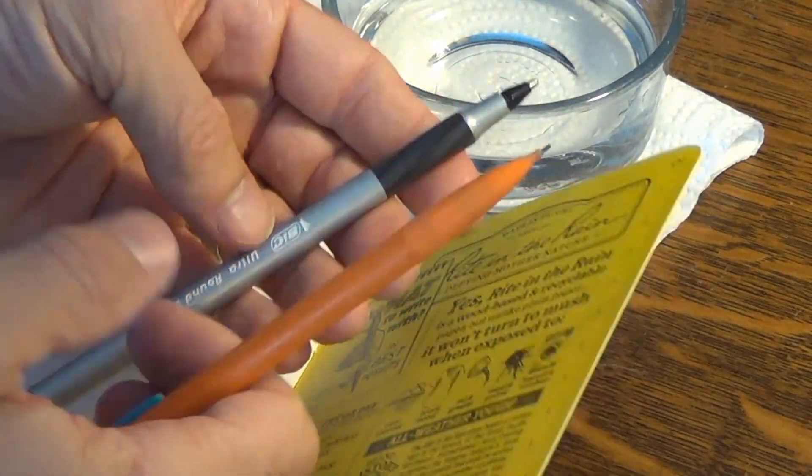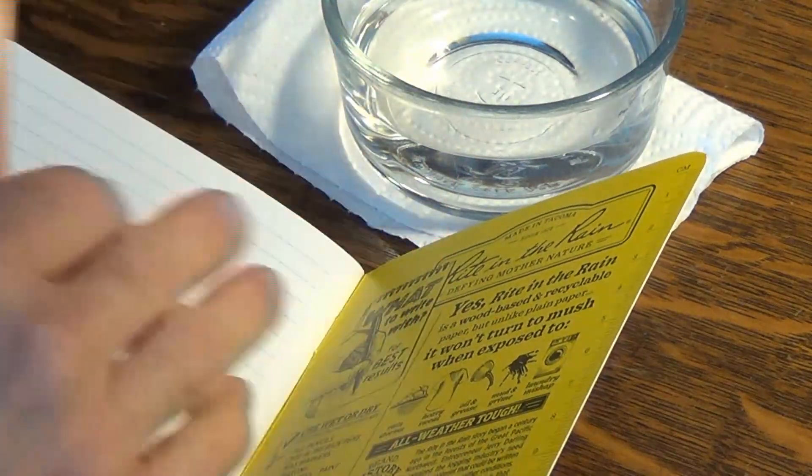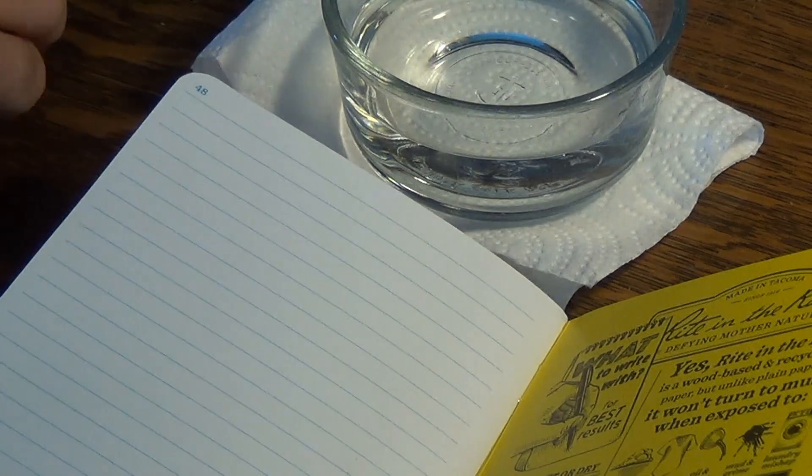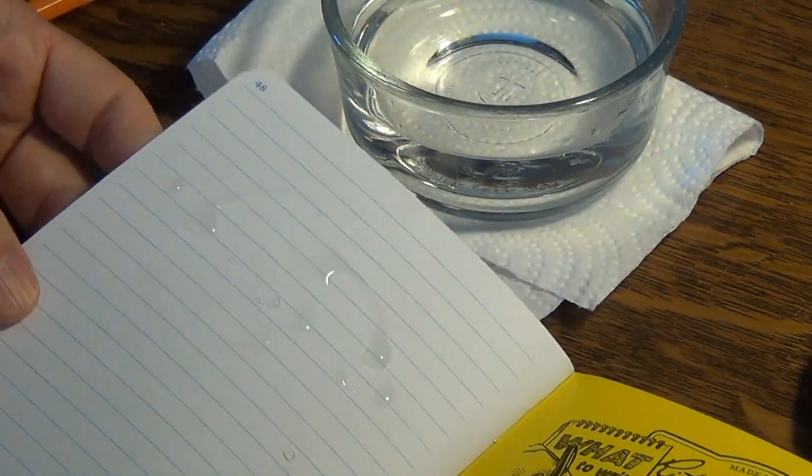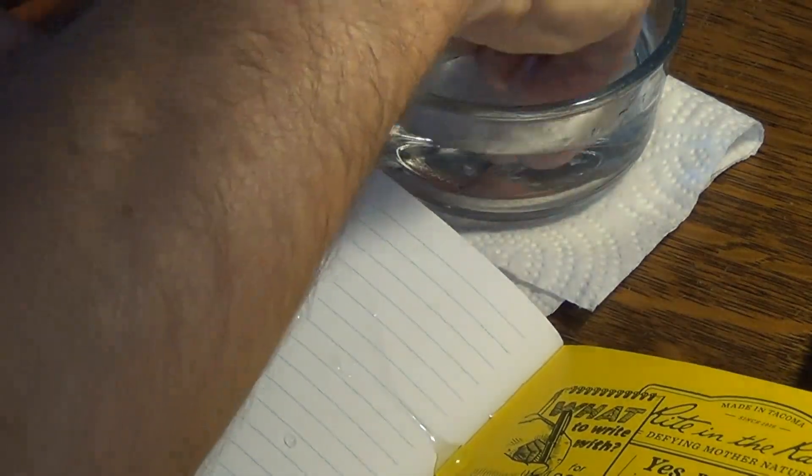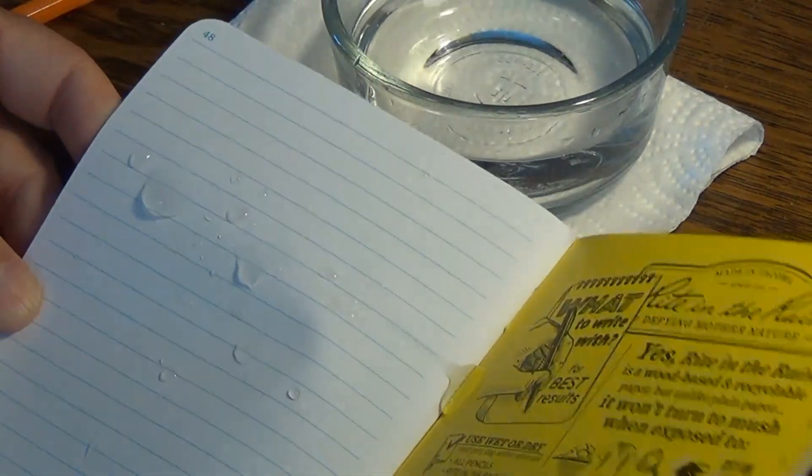Now the Rite in Rain company actually sells both mechanical pencils and pens that are specifically designed for these Rite in Rains. And so different inks may probably work better. So I'm just going to open it up to the last page. Just kind of dampen and you can kind of see the water beading there. Hopefully I have enough light so you can see.